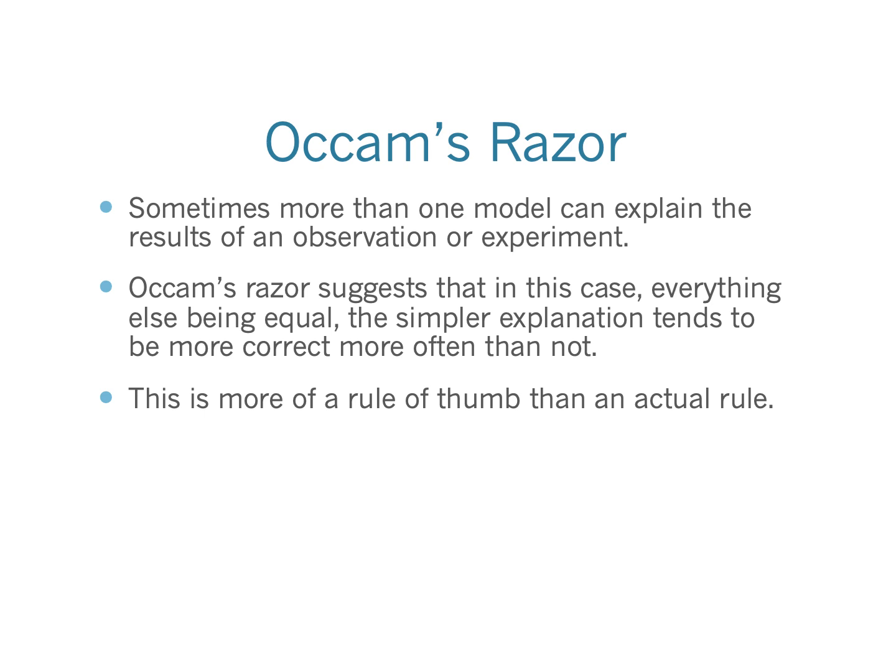There's another important concept in science: making a model. Our experiments don't give us truth — they lead us to building models, representations that explain what we observe. Sometimes you can perform an experiment and there can be multiple possible explanations that fit the data. The only way to determine which is correct is to come up with more experiments — ones that can rule out one explanation but not the other.